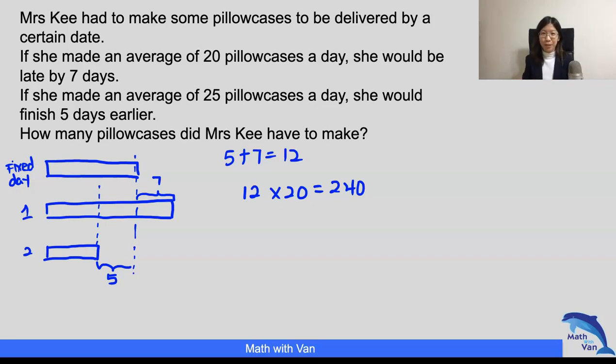In scenario two, how many more did she make every day? She made five more. As we can see from the question, she made five more pillowcases in scenario two than in scenario one. And this is how she was able to complete it much faster, even though she had to make the same number of pillowcases in both scenarios.